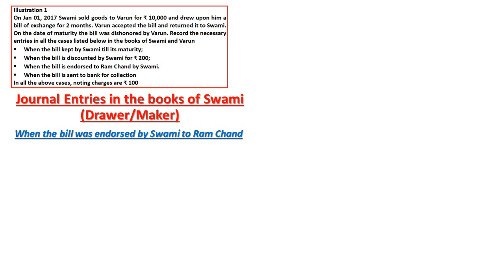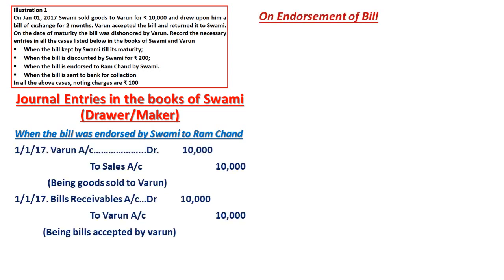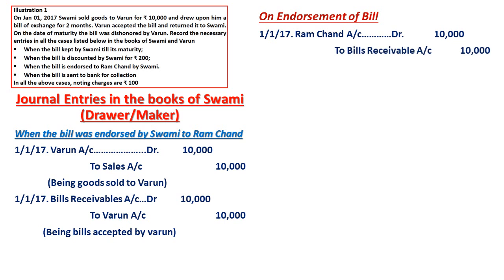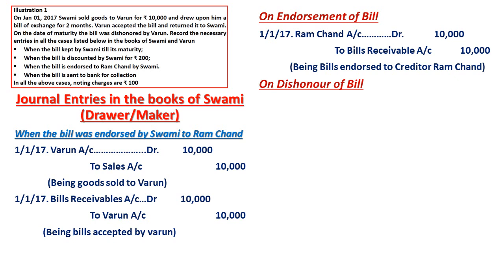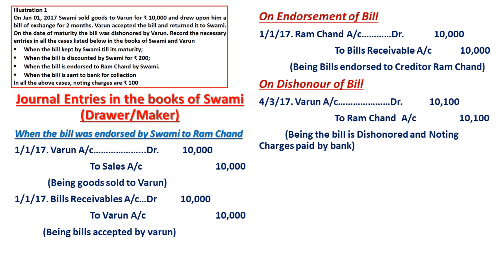Situation three — bill endorsed to Ramachand. First two entries remain the same. On endorsement: Ramachand Account Dr. To Bills Receivable Account, being bill endorsed to Ramachand (creditor). On dishonor: Varun Account Dr. To Ramachand Account with Rs. 10,100 including noting charges, being bill dishonored and noting charges paid by Ramachand.